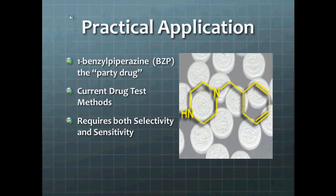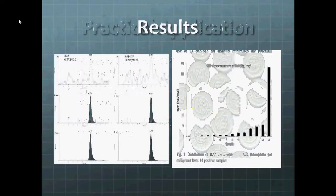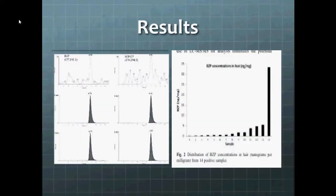So they set up a method where they analyzed these hair samples by HPLC coupled with triple quadrupole mass spec. And here's some of the results. If you look on the left, you'll see the top row is a mass spec for BZP and then to its right is a mass spec for deuterated BZP. As you can see, you get very clear signals. And then if you look at the chromatograms down below them, those are actually used for the actual analysis.